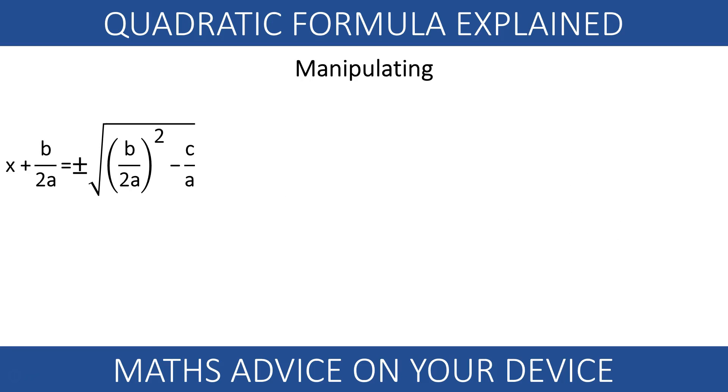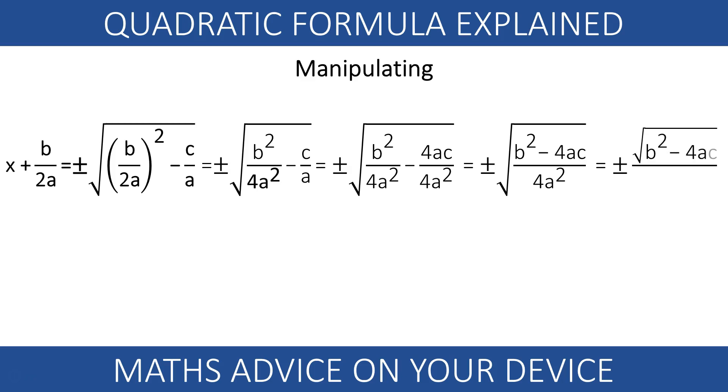Let's manipulate this a little bit to make it prettier. Squaring the fraction leads to b squared over 4a squared. Multiplying both sides of the second fraction by 4a makes the denominators equal. The square root of a fraction equals the square root of the numerator over the square root of the denominator.